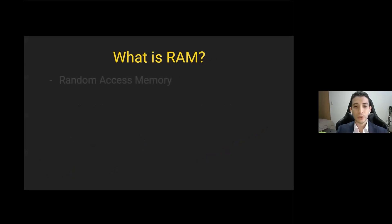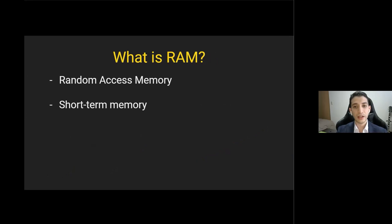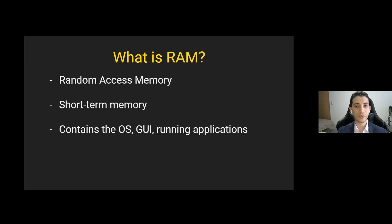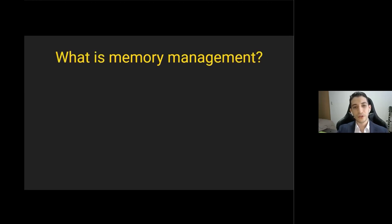RAM stands for Random Access Memory, and it is essentially the short-term memory where data is stored as a process needs it. It usually contains the operating system, the graphical user interface, and any currently running applications. To use an analogy: if you were a process, the RAM would be your desk, and you would bring all the tools and resources you need to perform the task — any variables, arrays, or functions — to your desk before you perform the task.